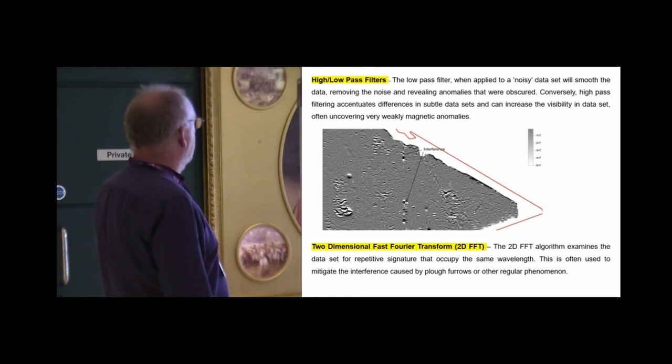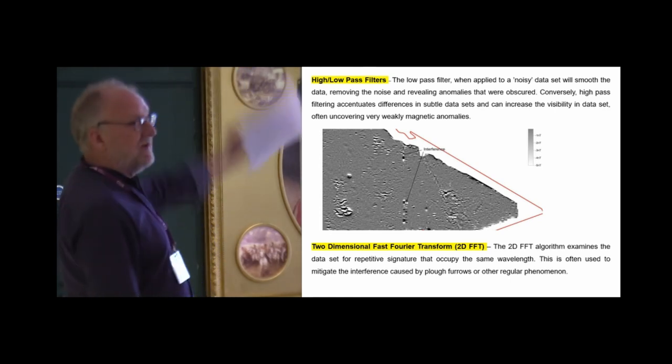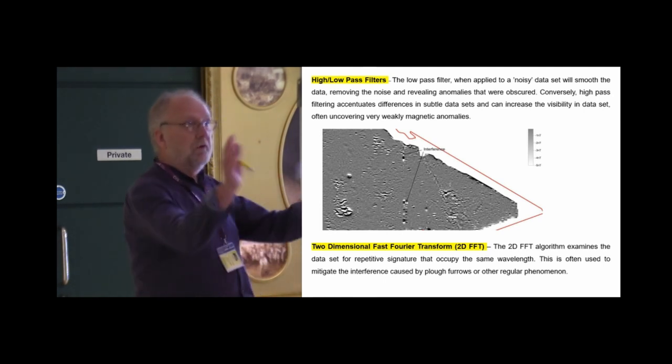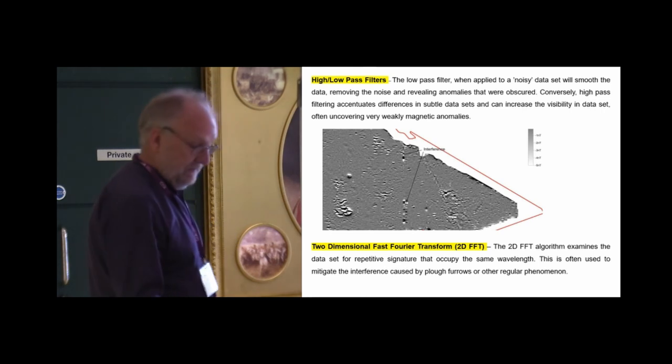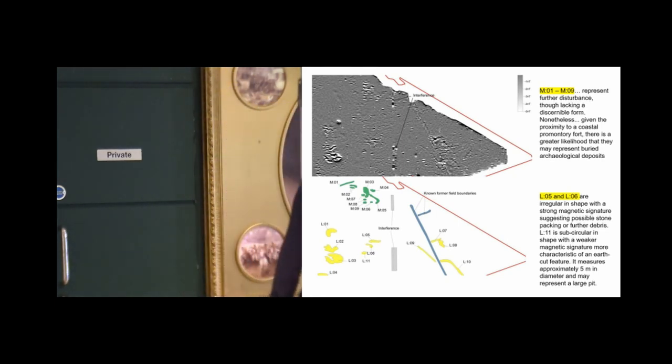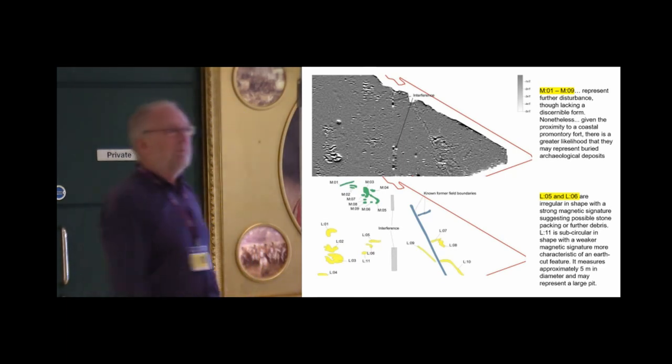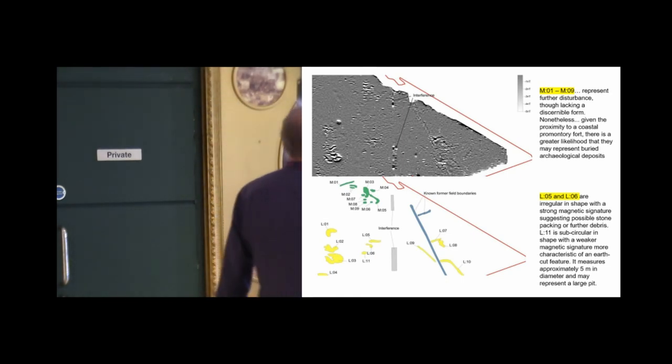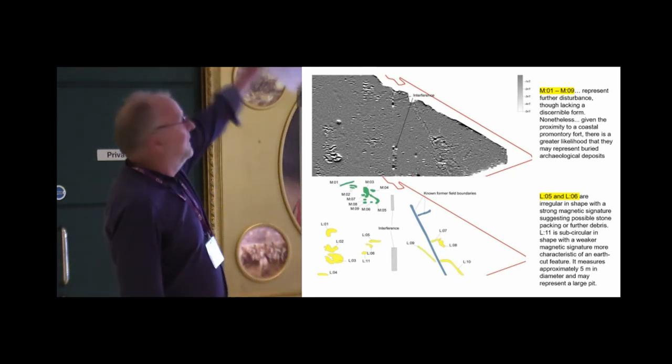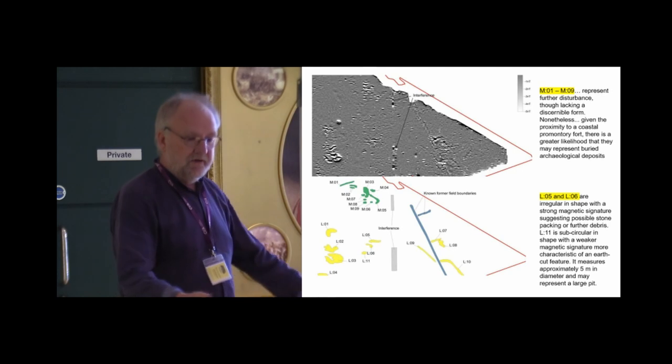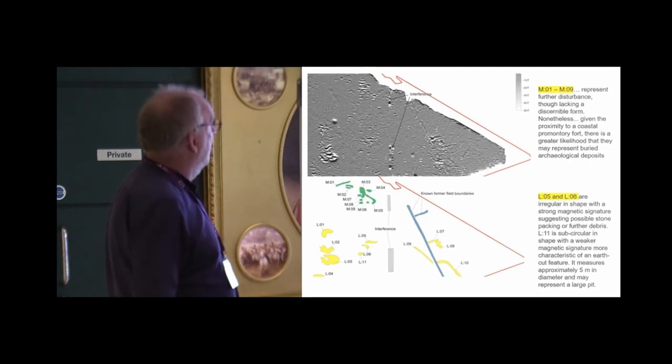We can do wonderful things. Two-dimensional fast Fourier transforms. High, low, pass, medium filters. Every sort of filter you like. And we end up with a data set like this. You can't see it at the back. Don't worry. It's not worth looking at. It really isn't. But somebody has put together an interpretation. And I'll just highlight one anomaly here. That is a pit. Probably five meters in diameter. It is archaeological. If the responses at the top, these are probably archaeological, because they're closer to a promontory fort that's adjacent to the site. I almost feel like the curator, who said before a break, why are we doing geophysics? If we're producing results like this, then I don't think we should be.